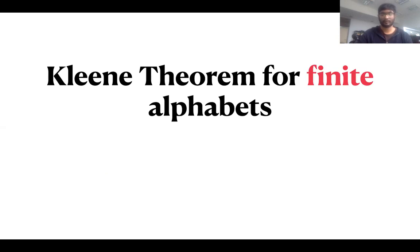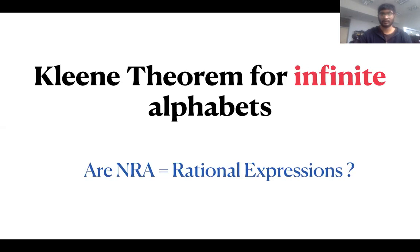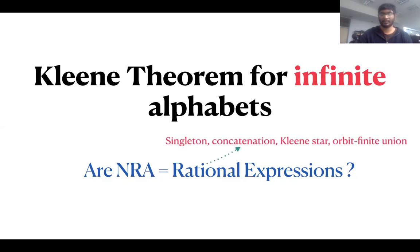One of the classical results for finite alphabets is Kleene's theorem, which says that for finite alphabets there are equivalent regular or rational expressions. The natural question is to ask whether there is such an expression for non-deterministic register automata. By rational expression, I mean an orbit-finite extension of regular expressions where we replace finite unions by orbit-finite unions.